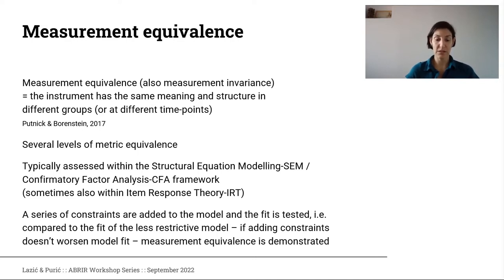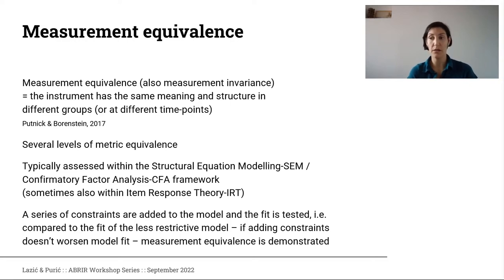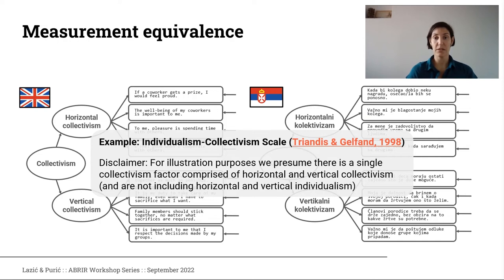The measurement equivalence testing process has several stages. We start from a very basic set of restrictions in the model and see whether the model fits well. If it does fit well, then we add another layer of constraints, and again check whether adding these constraints significantly worsens model fit or whether the model still fits fairly well. If the constraints worsen the fit significantly, we conclude that's where we stop. We will illustrate all of this through an example using the individualism-collectivism scale.